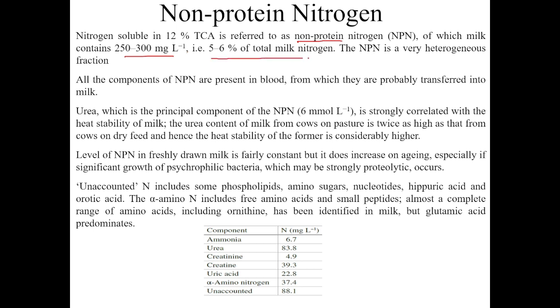Milk contains approximately 250 to 300 milligrams per liter of non-protein nitrogen, which represents five to six percent of the total milk nitrogen. NPN is a very heterogeneous fraction — it is not a homogeneous fraction.